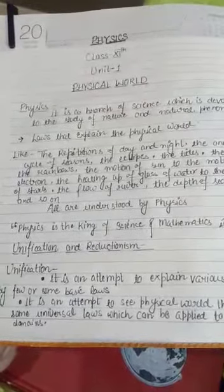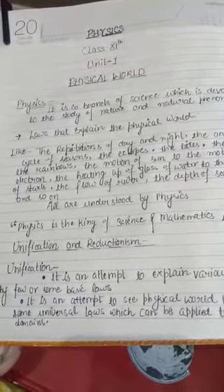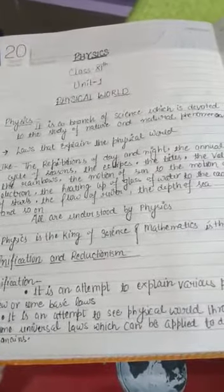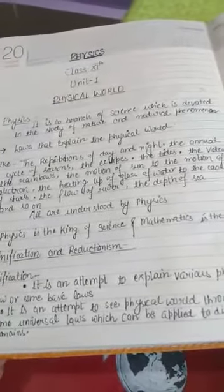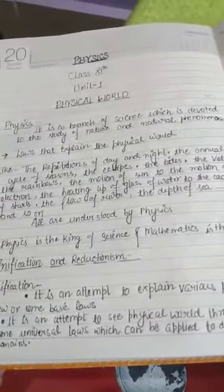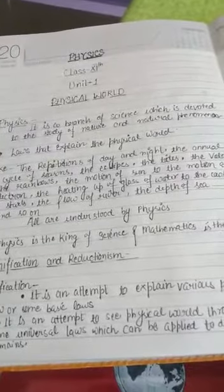Laws that explain the physical world, for example, the repetition of day and night, the annual cycle of seasons, the eclipse, the tides, the volcanoes, the rainbows, the motion of sun to the motion of electron, the heating up of glass of water to the cooling of stars, the flow of river, the depth of sea and so on. All are things understood by physics.